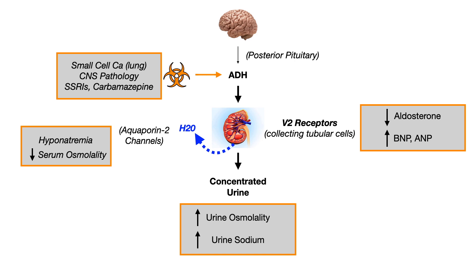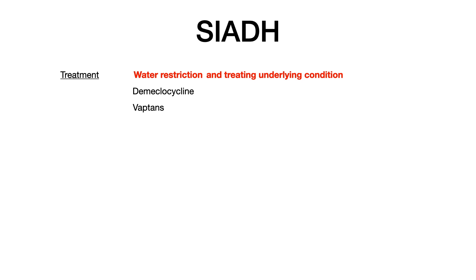If you can follow this flowchart — from the inciting agent causing too much ADH, causing too much water reabsorption, causing hyponatremia, dropping serum osmolality, dropping aldosterone, increasing urine osmolality, and increasing urine sodium — recognizing all of those laboratory abnormalities makes answering a USMLE or COMLEX question much easier because you understand the pathophysiology. The treatment for SIADH is primarily two things: water restriction and treating the underlying condition.